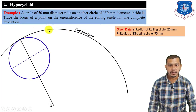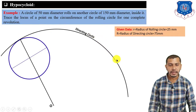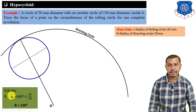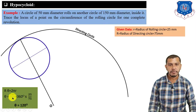The rolling circle covers an arc length of 2πr on the directing circle. So R·θ = 2π·r, and θ = 2π·r / R = 360° × 25 / 75. The angle θ = 120°. Measure 120° from the baseline and mark the endpoint — when the rolling circle completes one revolution, it reaches this position.